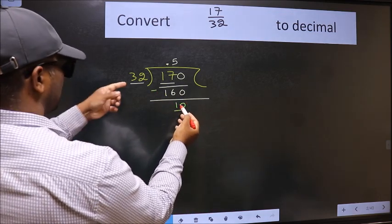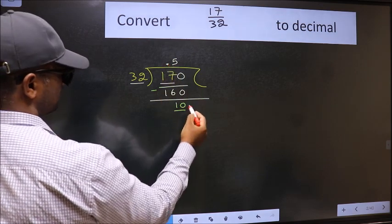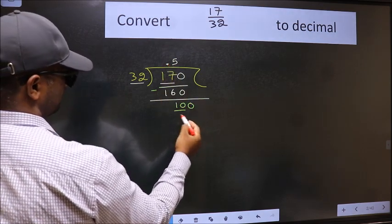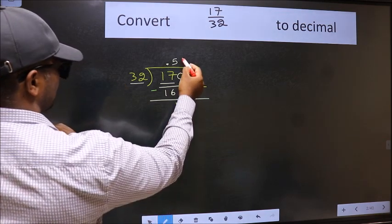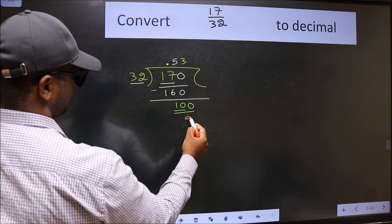10 is smaller than 32 and we already have the decimal. So directly take 0. So 100. A number close to 100 in the 32 table is 32 times 3, which is 96.